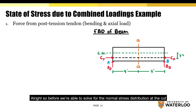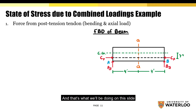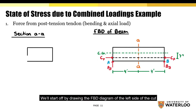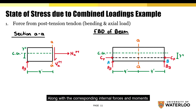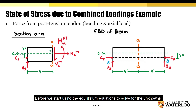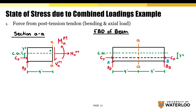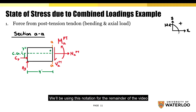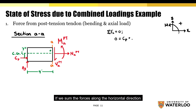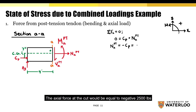Before solving for the normal stress distribution at the cut, we first need to determine the axial forces and moments. We'll draw the FBD of the left side of the cut along with the corresponding internal forces and moments. We'll establish a positive sign convention that we'll use for the remainder of the video. Starting with the horizontal forces: summing forces in the horizontal direction, the axial force at the cut equals negative 2500 pounds.